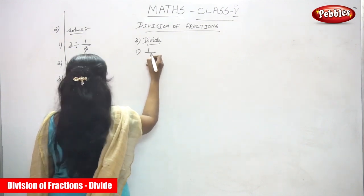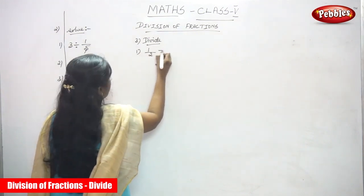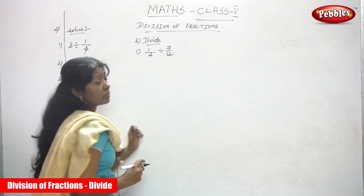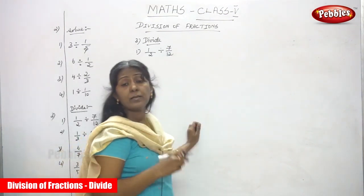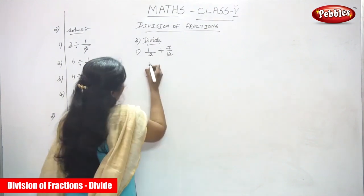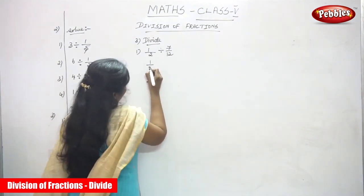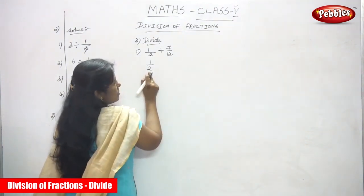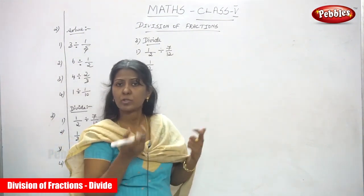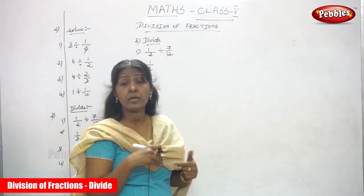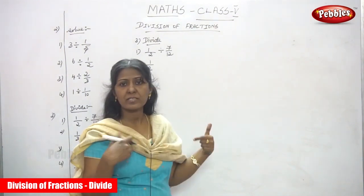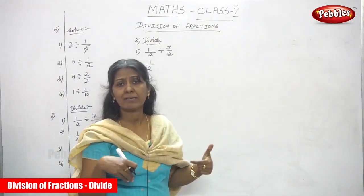First sum: 1/2 divided by 7/12. Here both are fractions, so you have to divide. You write 1/2 as it is because it's already a fraction — no need to apply step one. You only need to convert a whole number into a fraction; since a fraction is already given in the sum, no need to do that here.